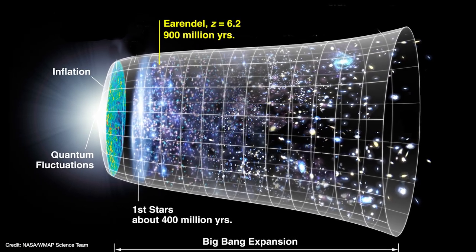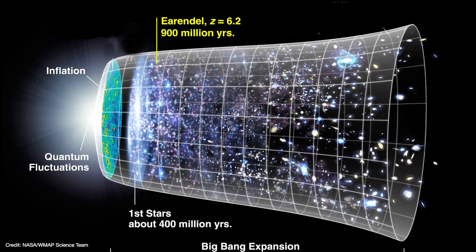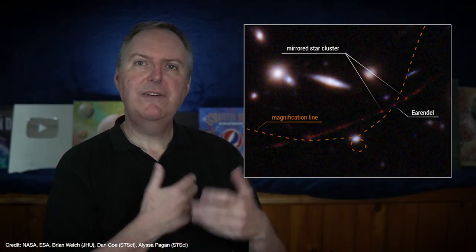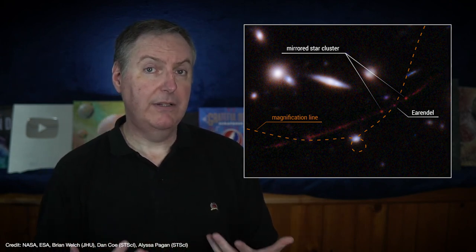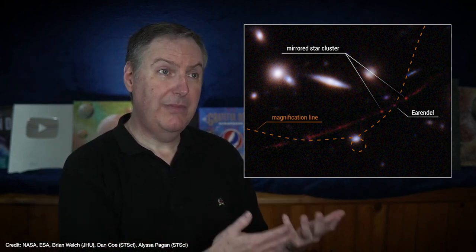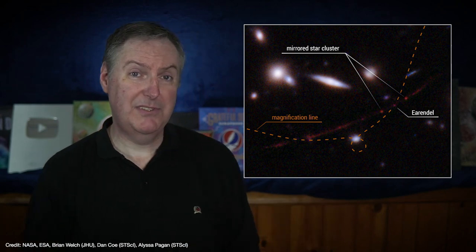Earendel's redshift puts it at around 900 million years after the Big Bang. Now, even if it were only a 50 solar mass star, it wouldn't have been around for very long. So it had to form at about the same time it was discovered.